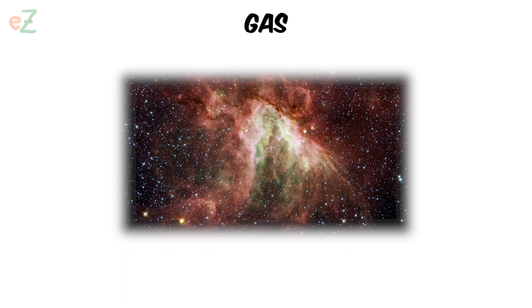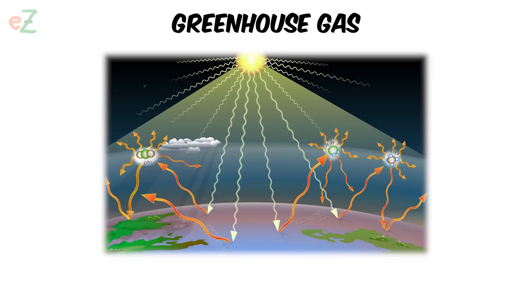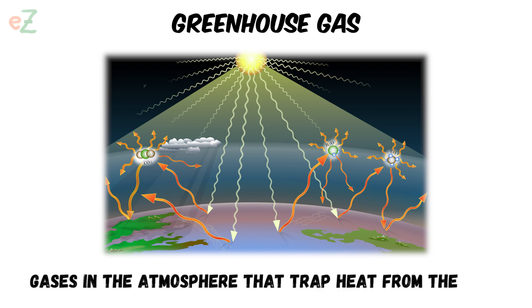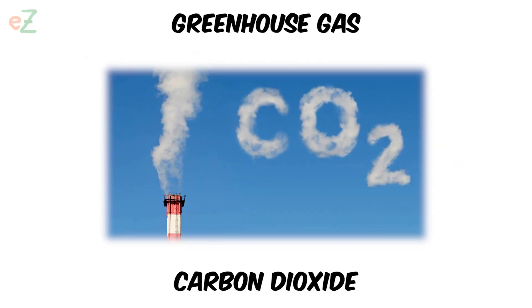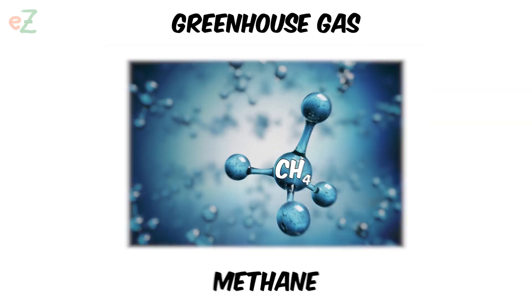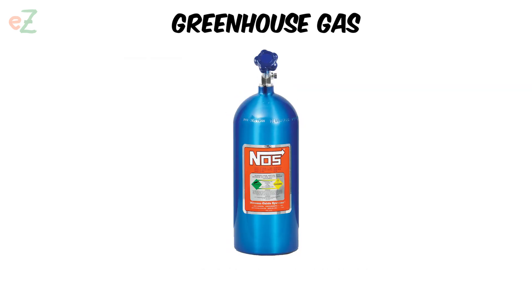Gas. A loose collection of atoms moving around each other. Gravity. A force that pulls matter together. Greenhouse gas. Gases in the atmosphere that trap heat from the sun. Some greenhouse gases are carbon dioxide, methane, water vapor, and nitrous oxide.